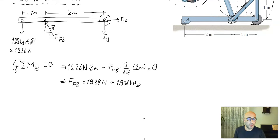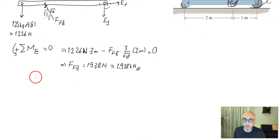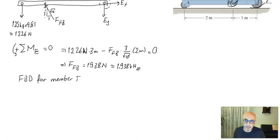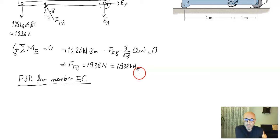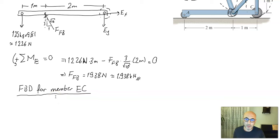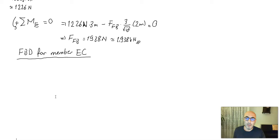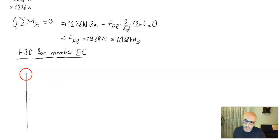To find the force in member BD, we now draw the free body diagram for the vertical member EC.